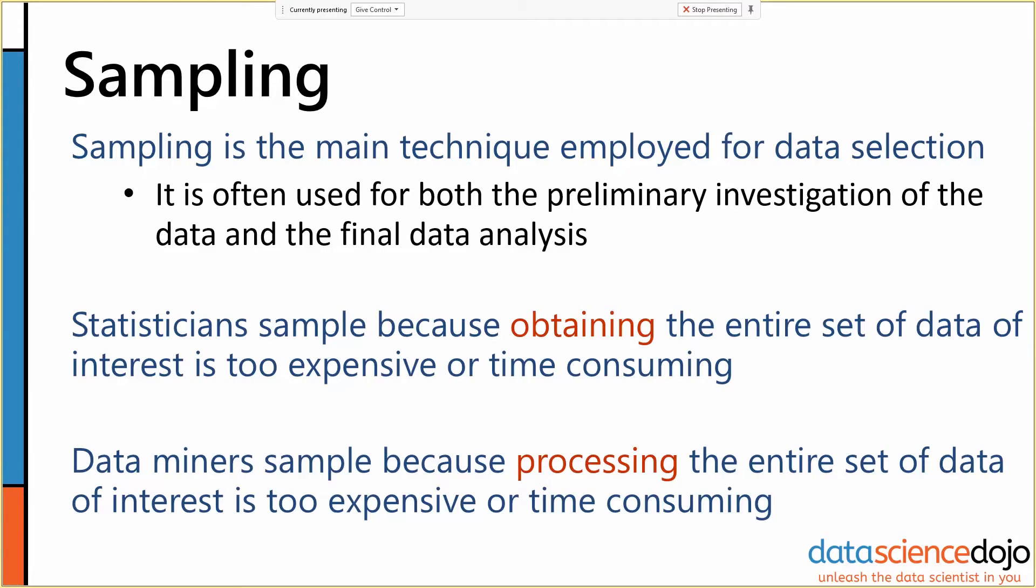Statisticians have been sampling for the length of time that their discipline has existed, because obtaining the entire set of data of interest is either too expensive, too time consuming, or even theoretically impossible. There is no way that you can obtain the entire set of some kinds of data. It's just not possible.